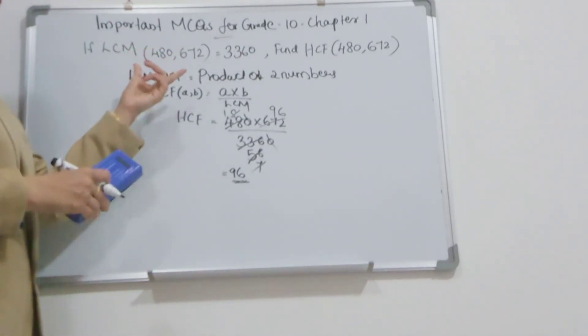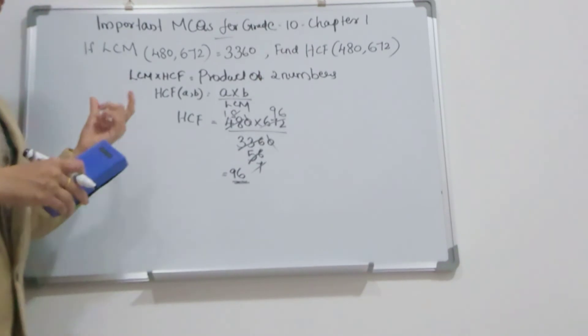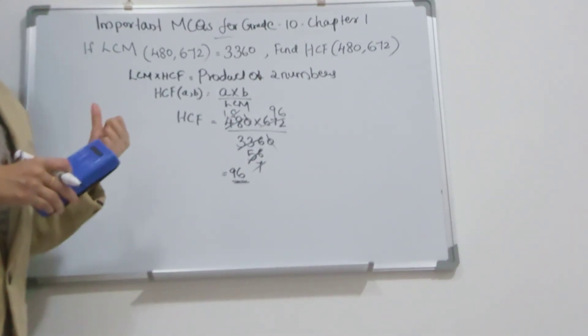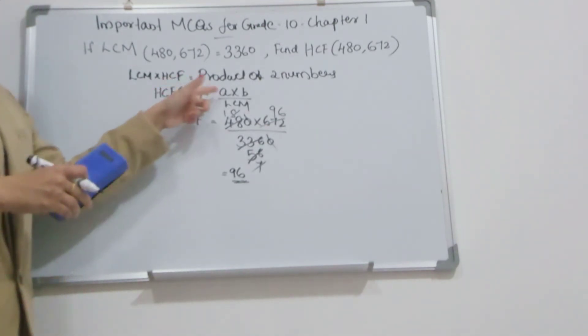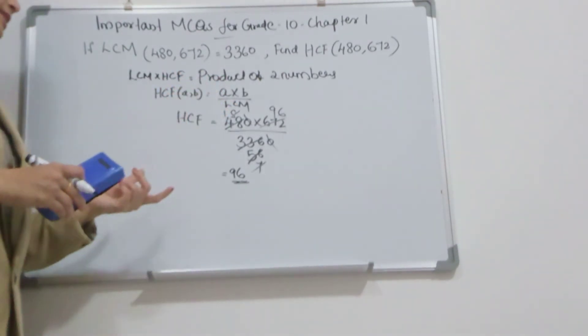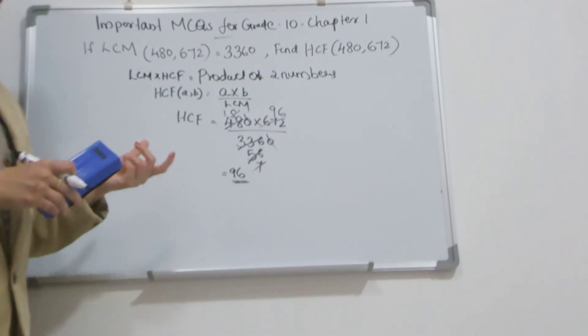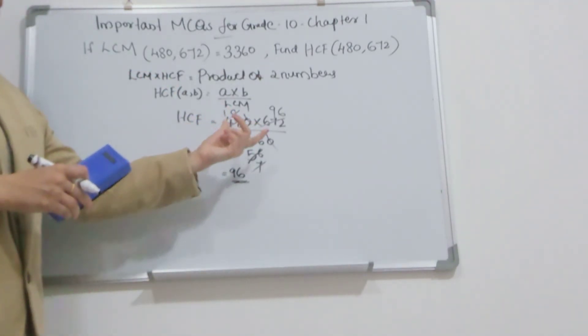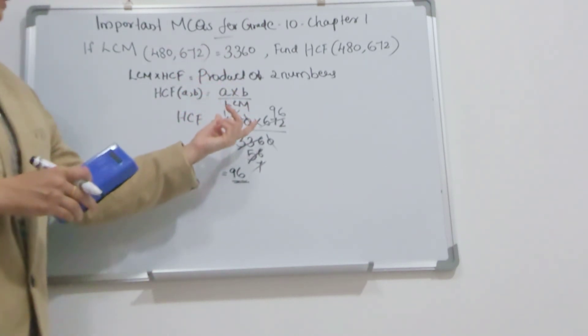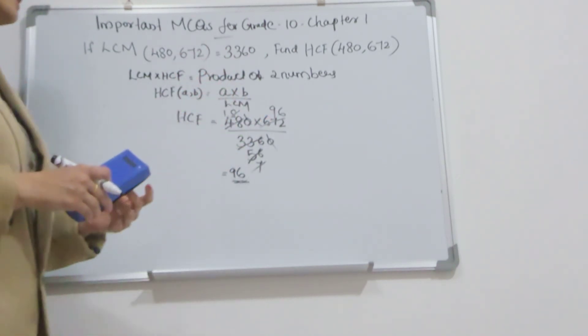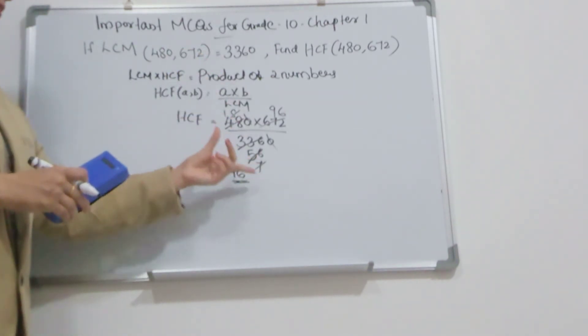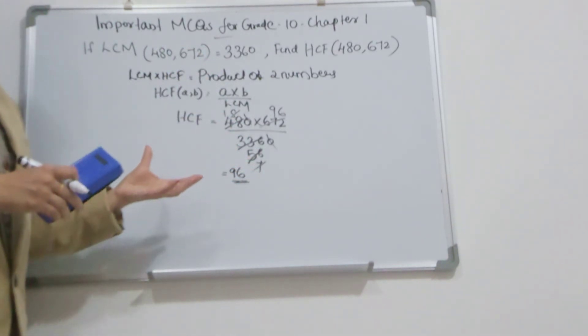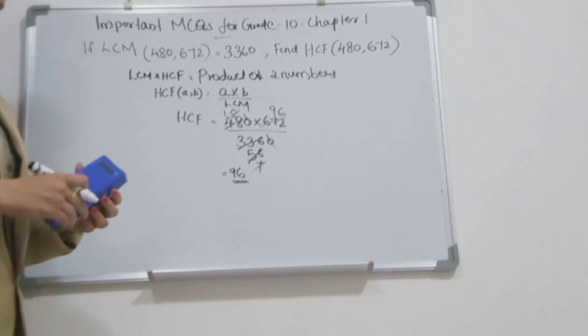LCM given, HCF we need to find. We learned the formula: HCF × LCM equals the product of those 2 numbers. HCF equals the product of 2 numbers divided by LCM. Here, product of 2 numbers - take 480 × 672 divided by LCM. After simplification, we get HCF. Okay students, thank you.